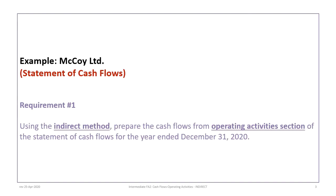This tutorial is based on the McCoy Limited example, so please make sure you have downloaded and previewed the information. There is basically a balance sheet, an income statement, and some additional information. The first requirement is, again using the indirect method, to prepare the statement of cash flows operating activity section only, for the year ended December 31st, 2020.